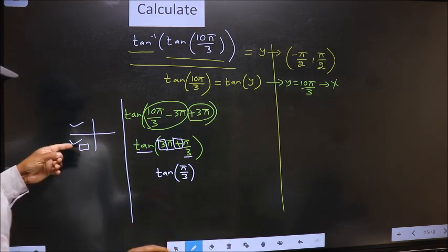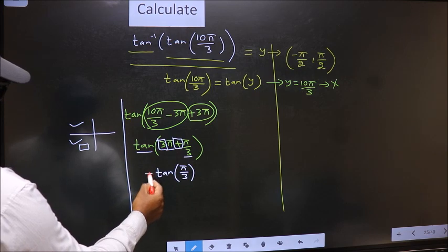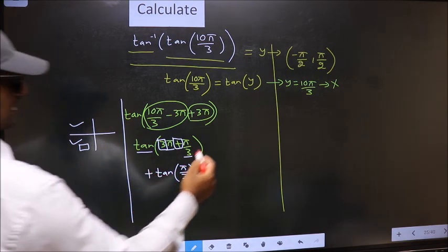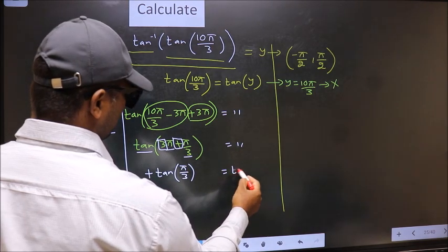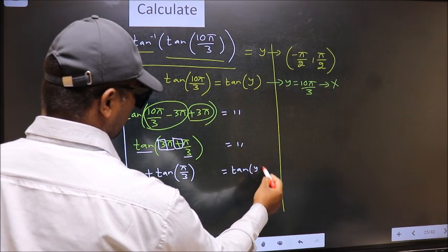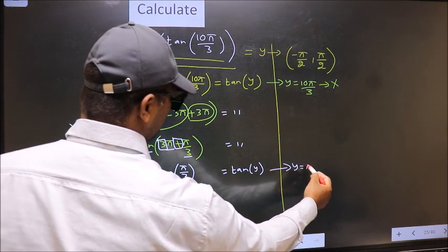And in the third quadrant, tan is positive. So put plus. On the other side, no change: equal to tan(Y). Now comparing both sides, we get Y to be π/3.